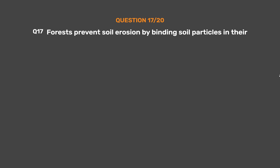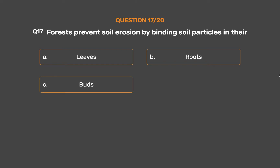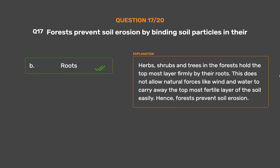Question number seventeen: forests prevent soil erosion by binding soil particles in their — Option A: leaves. Option B: roots. Option C: buds. Option D: stems. The correct answer is option B, roots. Herbs, shrubs, and trees in the forests hold the topmost layer firmly by their roots. This does not allow natural forces like wind and water to carry away the topmost fertile layer of the soil easily. Hence, forests prevent soil erosion.